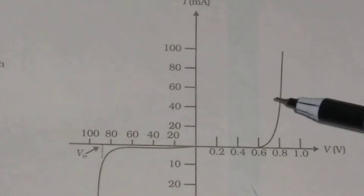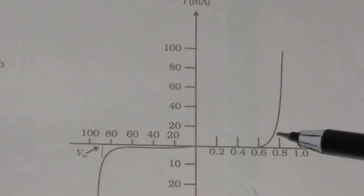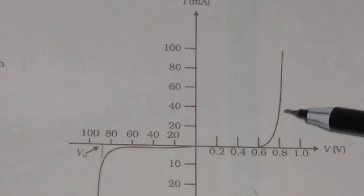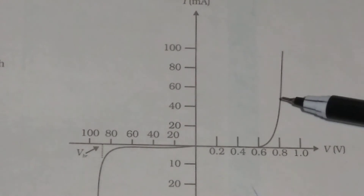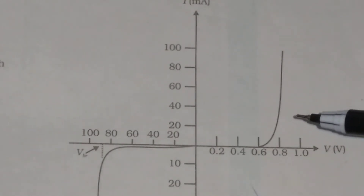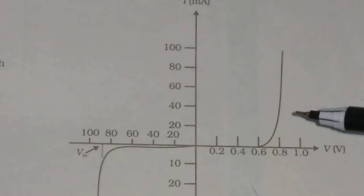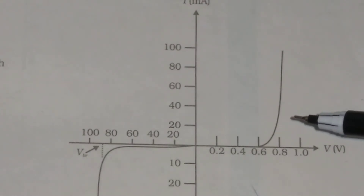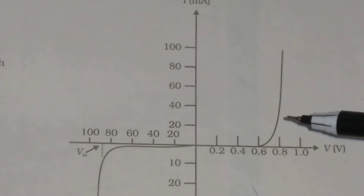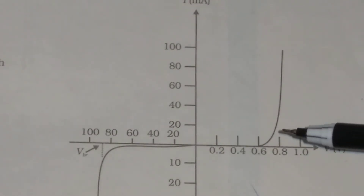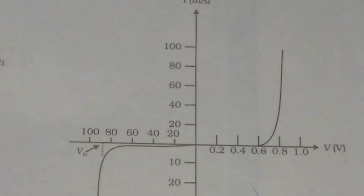Due to the electric field at the P-N junction, the minority charge carriers move towards the majority side, producing drift current. The order of the drift current is very small, of the order of microampere.